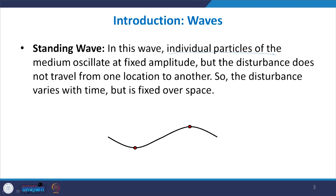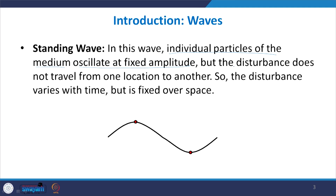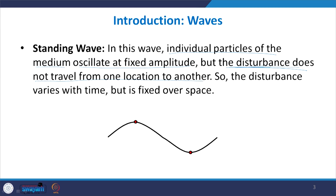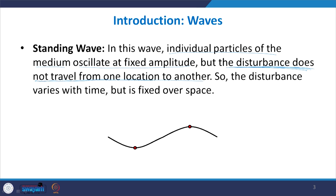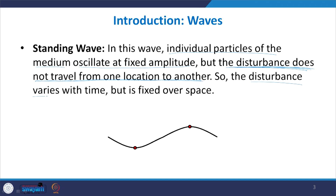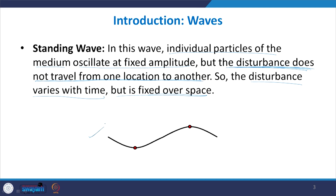A standing wave is a wave where individual particles of the medium oscillate at a fixed amplitude, but the disturbance does not travel from one location to another. Whatever disturbance is created at one location is not propagating over space. The disturbance varies with time but not over space, and this animation shows a typical standing wave.